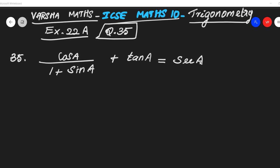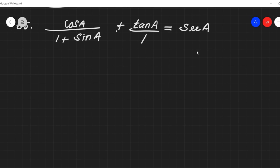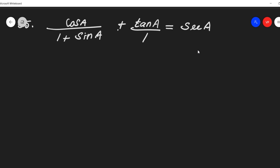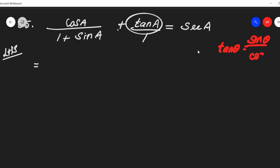So we have a plus sign here. What is our LHS? This is a very simple problem. Our first step: tan theta can be written as sin theta by cos theta, and secant theta is the reciprocal of cos, so it is 1 by cos.